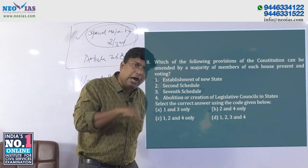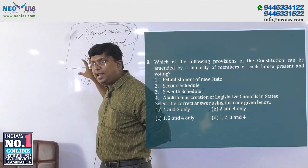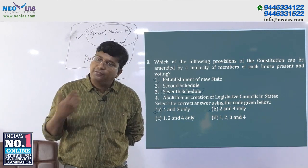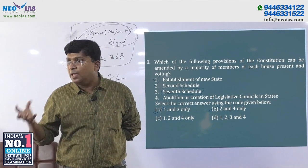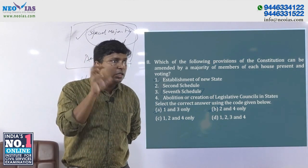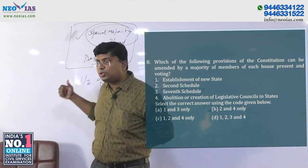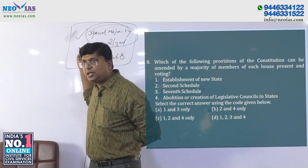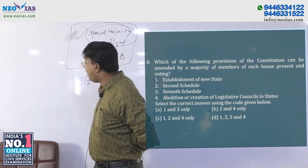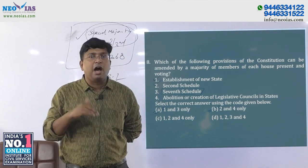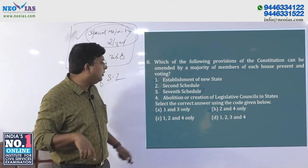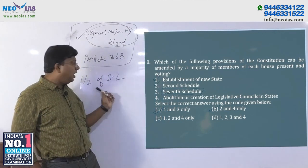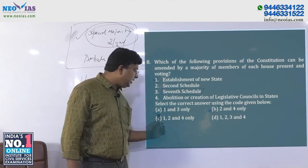Parliament passed the GST constitutional amendment bill with special majority in both houses, and once half of the state legislatures approved it, the GST constitutional amendment came into force. Currently there are 28 states, so half means 15 states. The Seventh Schedule affects the federal feature, so it not only requires two-thirds majority — it also requires approval of half the state legislatures. Therefore the answer is C: 1, 2, and 4.